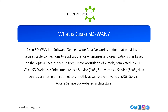Cisco SD-WAN uses infrastructure-as-a-service (IaaS), software-as-a-service (SaaS), data centers, and even the Internet to smoothly advance the move to a SaaS, service-access-service-edge based architecture.